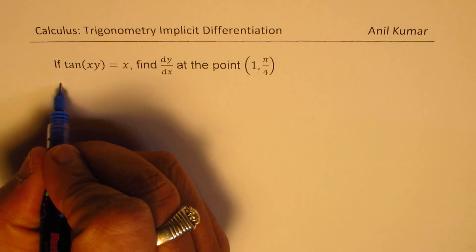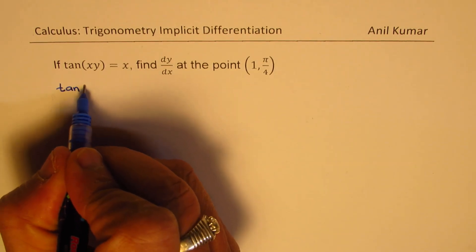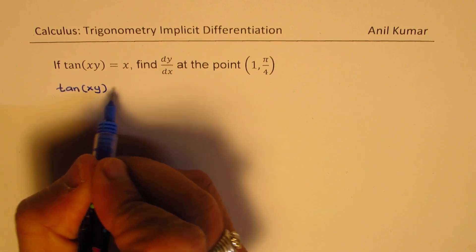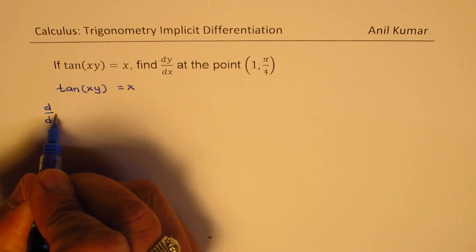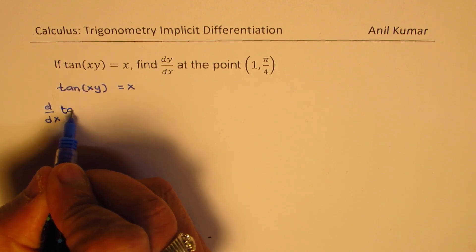So, we are given that tan(xy) is equal to x. Now, if I differentiate with respect to x both sides, what do I get?